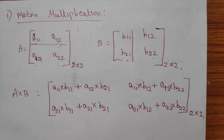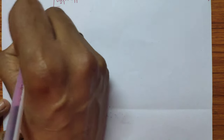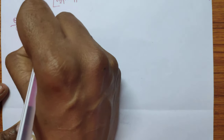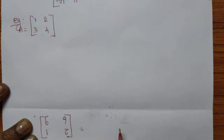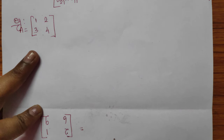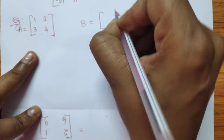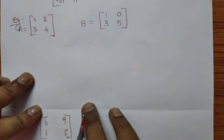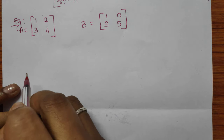This is the general view. We will see an example for it. We are taking a 2x2 matrix. Matrix A has elements 1, 2, 3, and 4. Matrix B has elements 1, 0, 3, and 5. These are the two matrices and we have to perform the multiplication operation.